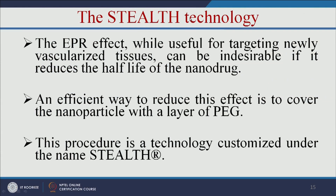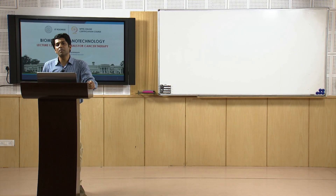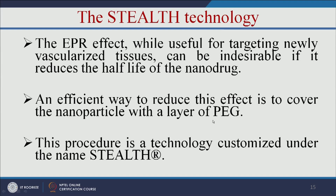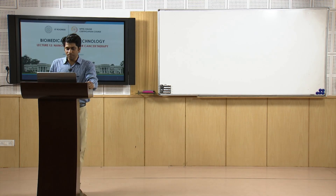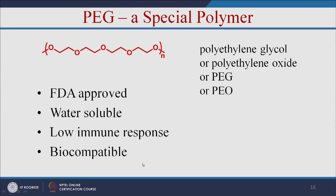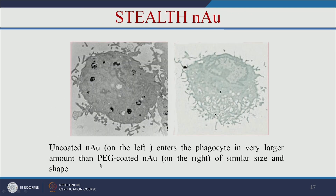When using the EPR effect, a main problem is the immune system attacking your nanoparticle. To protect the nanoparticle from the immune response, we add a polymer — polyethylene glycol (PEG). That technology is called stealth technology. We use PEG because it is FDA approved, water soluble, has low immune response, and is highly biocompatible. By using PEG, we can protect our nanoparticle from immune cells.